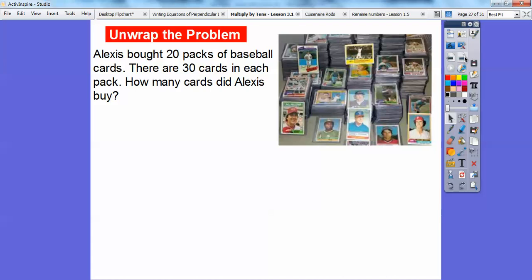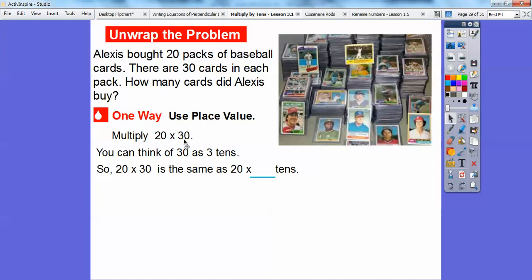Let's try some of this with the tens and stuff here. So Alexis bought 20 packs of baseball cards, and each pack there are 30 cards. So how many cards did Alexis buy? So we're going to multiply 20 times 30. And one way we're going to do this is use place value. So we can think of this 30 right here as 3 tens. So 20 times 30 is the same as 20 times 3 tens. So what we can do is then multiply 20 times 3 is 60. So we're going to get 60 tens right there. And 60 tens is going to be 600. So remember tens is with another zero right there. So it's 60 with another zero or 600. So 20 times 30 is 600.